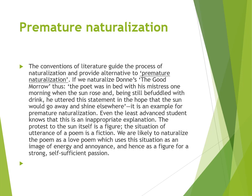Next Culler explains the topic of premature naturalization. He says that the conventions of literature guide the process of naturalization and provide alternatives to premature naturalization. To explain this, he gives an example of Donne's poem 'The Good Morrow.' Here the poet was in bed with his mistress. One morning when the sun rose, and being still befuddled with drink, he uttered the statement in the hope that the sun would go away and shine elsewhere. It is an example of premature naturalization.